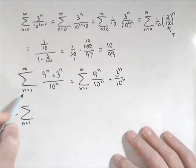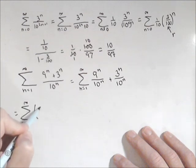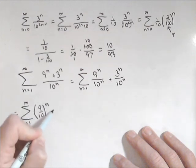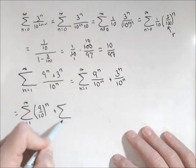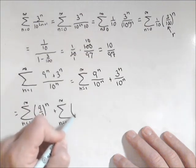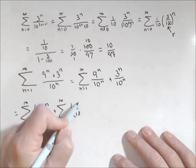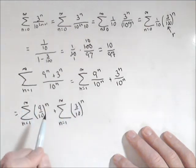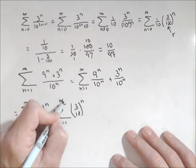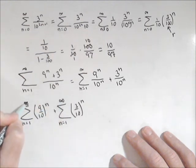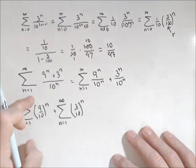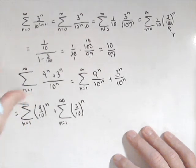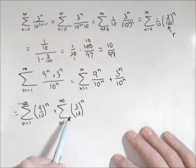n equals 1 to infinity of 9 tenths to the n using our property of exponents, plus the summation of n equals 1 to infinity of 3 tenths to the n. So we have two exponentials. Now we need to make sure both converge. 9 tenths is less than 1 so that one will definitely converge. 3 tenths is less than 1 so that one will definitely converge. So both of these are going to converge.